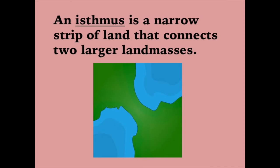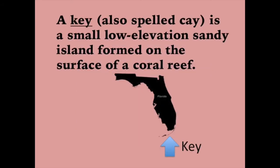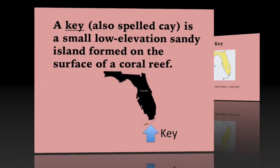An isthmus is a narrow strip of land that connects two larger landmasses. A key, also spelled cay, is a small, low elevation, sandy island formed on the surface of a coral reef.